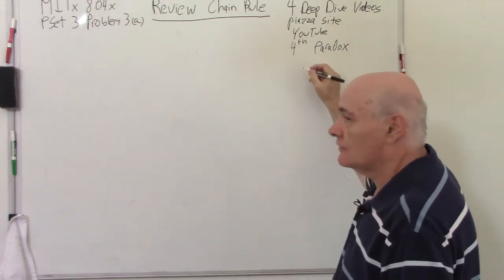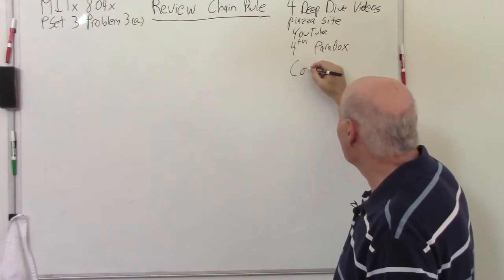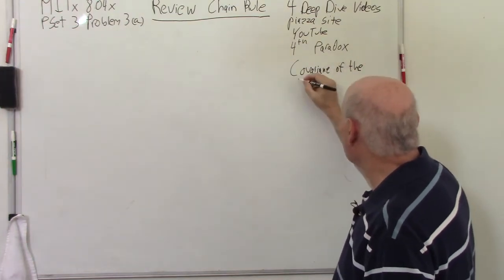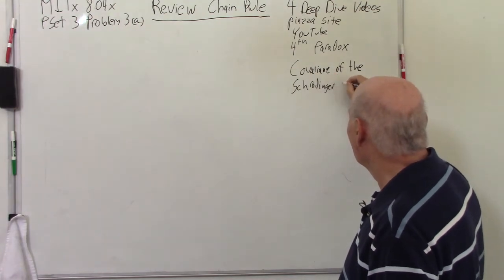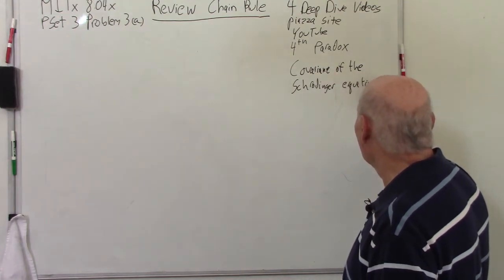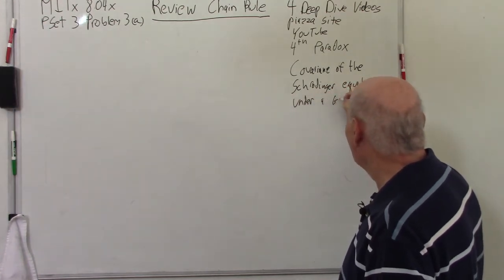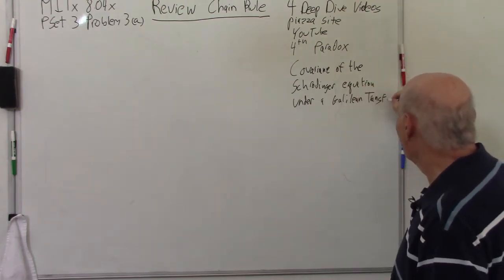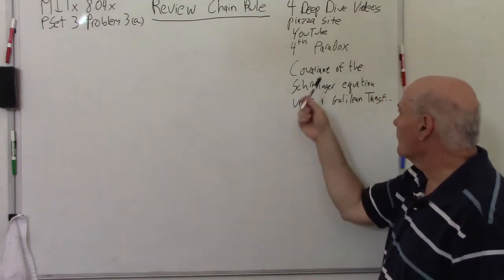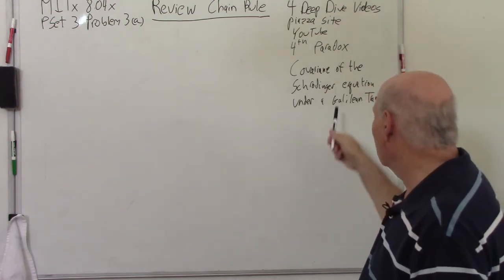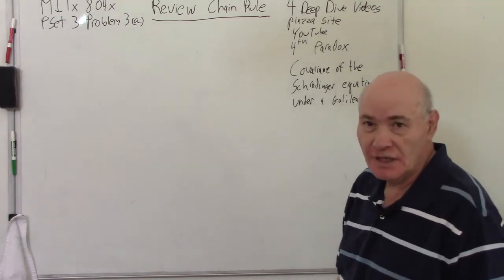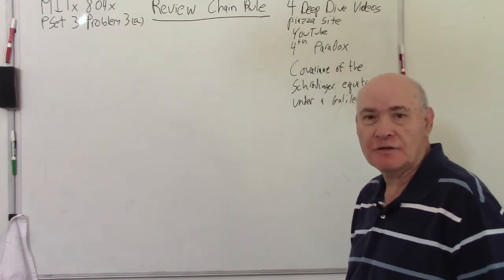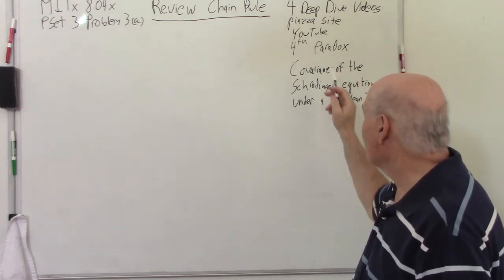All of this pertains to the covariance of the Schrödinger equation under a Galilean transformation. The Schrödinger equation is non-relativistic, and the Galilean transformation is a non-relativistic transformation. So it's not surprising that this would be the case, and this problem — which is usually not covered in an introductory quantum mechanics course — really goes through exactly showing this covariance.